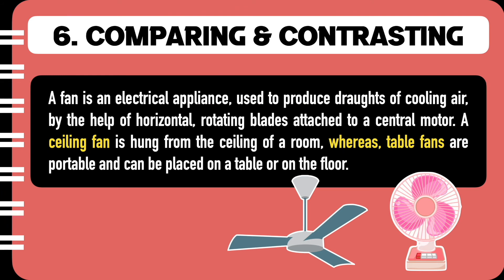Moving to the sixth way: comparing and contrasting. Taking the example of a fan, I will start with the generic definition and then move on to comparison. A fan is an electric appliance used to produce drops of cooling air by the help of horizontal rotating blades attached to a central motor. A ceiling fan is hung from the ceiling of a room, whereas table fans are portable and can be placed on a table or on the floor. Using the word 'whereas,' we are able to compare and contrast the ceiling fan and the table fan.